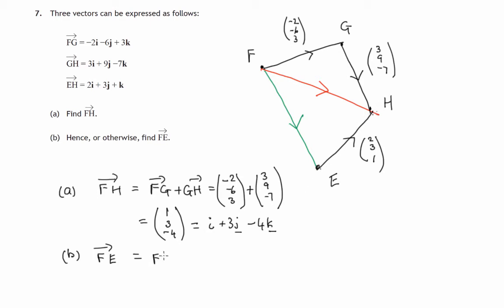So let's do that. F to H, which we've already worked out, followed by H to E. So components of FH are (1, 3, -4).